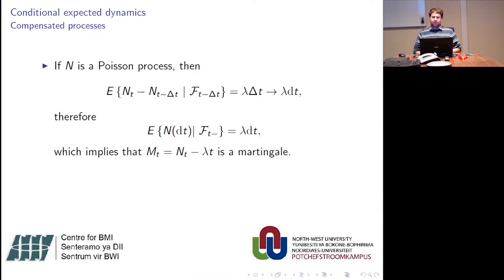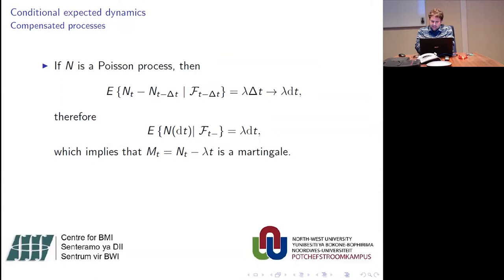Applying this to Poisson processes: if we take the conditional expected value of the increments, because a Poisson process's increments are independent of the past, the conditional expectation is just the expectation of the increment. Because increments are identically distributed, the expectation equals lambda delta T, and in the limit this goes to lambda dT. Therefore, the conditional expected dynamics of a Poisson process equals lambda dT. If we subtract that quantity from our Poisson process, we can form a martingale.